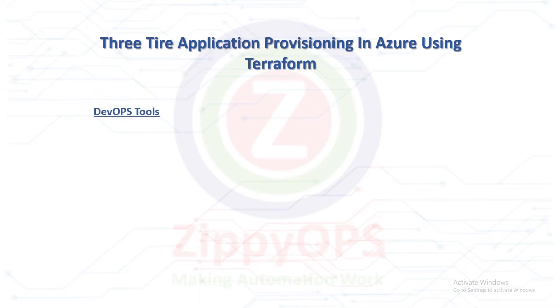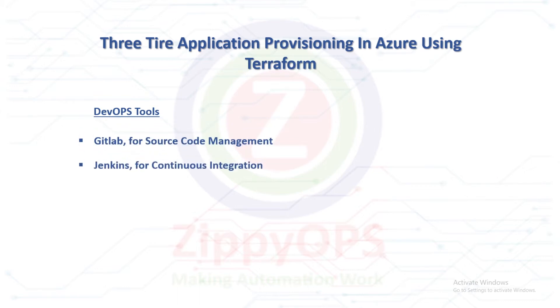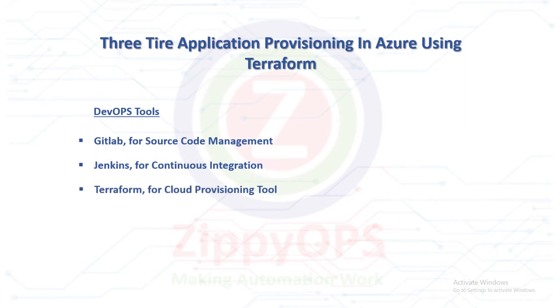The tools used in this Azure 3-tier application provisioning are: GitLab for source code management, Jenkins for continuous integration, Terraform for cloud provisioning, and Azure for public cloud service platform.